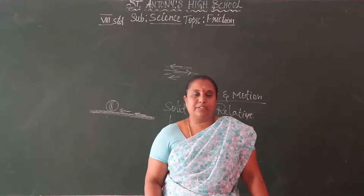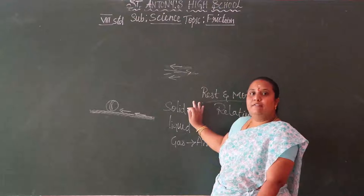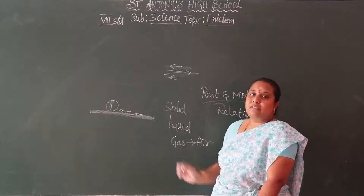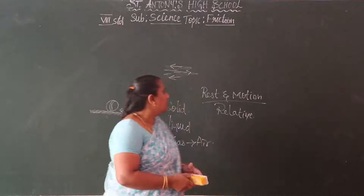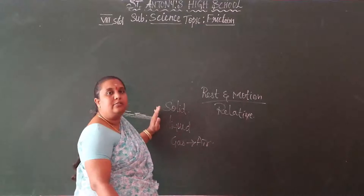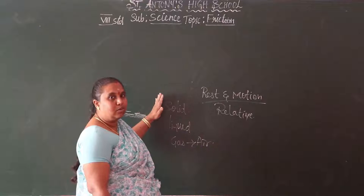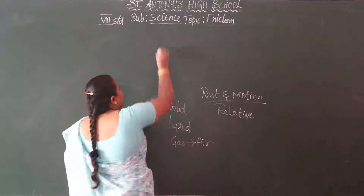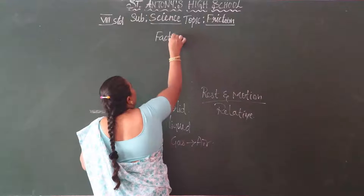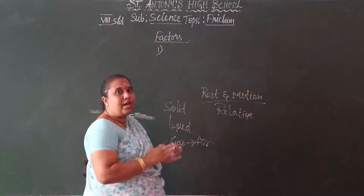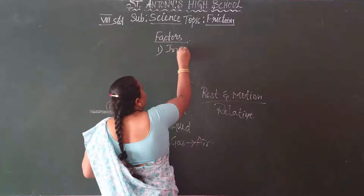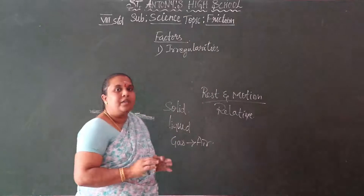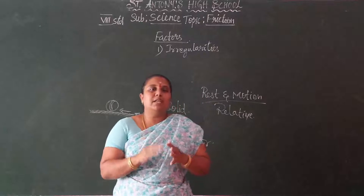Now, factors affecting friction. What are the factors which affect the frictional force? The first is the irregularities on the surface of the objects. What does irregularities mean? So here, if the surface is very smooth and regular on the ground, we can say the ball is moving in the same direction.